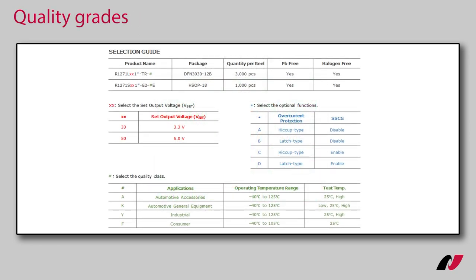We distinguish different quality classes to offer customers solutions for respective applications. The main differences are the operating temperature range and the test environment of the product. A consumer quality level is suitable for consumer products such as smartphones, TVs, PCs and so on.